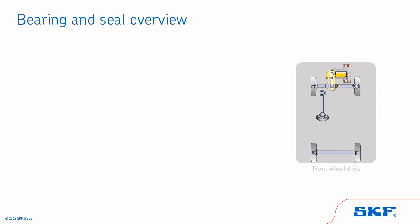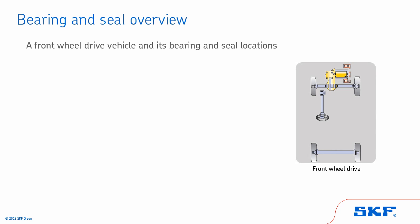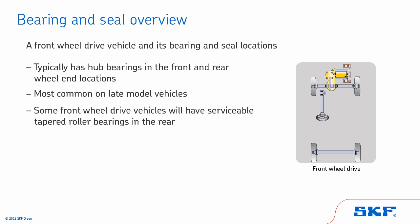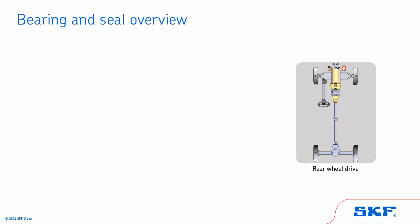This illustration shows a generic layout of a front-wheel drive vehicle and its bearing and seal locations. This type of vehicle typically has hub bearings in the front and rear wheel end locations and is most common on late-model vehicles. However, some front-wheel drive vehicles will have serviceable tapered roller bearings in the rear.